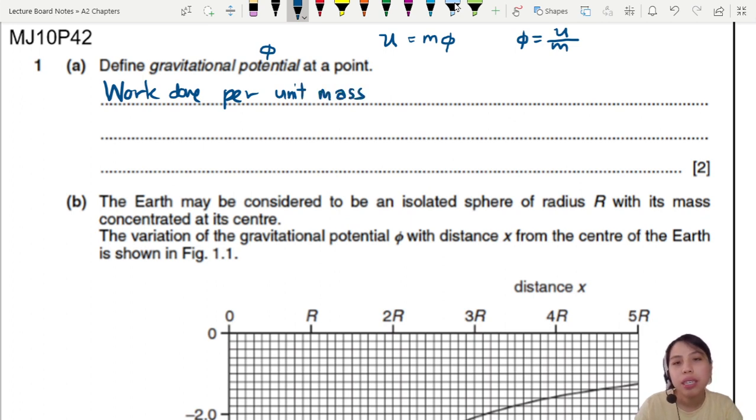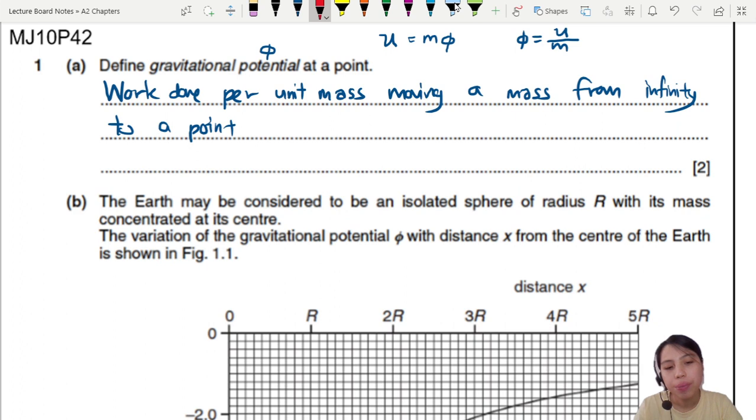moving. So what are you trying to do? You're trying to move a mass, a unit mass, from infinity to a point. So the first idea is you talk about work done per unit mass. Per unit mass is an important term here that you must include. And to do what? Work done to do what? Move a mass from infinity to a point. That's the A1 mark.